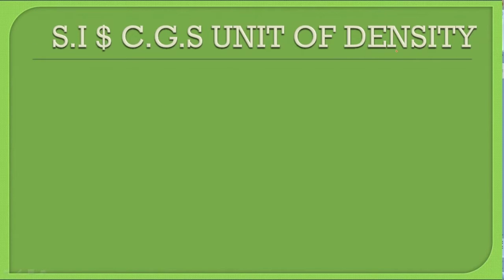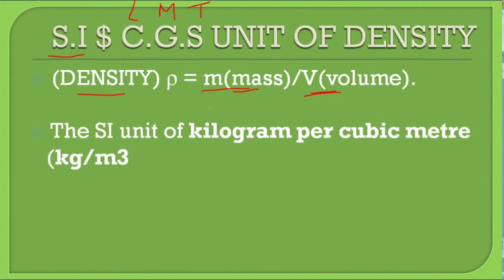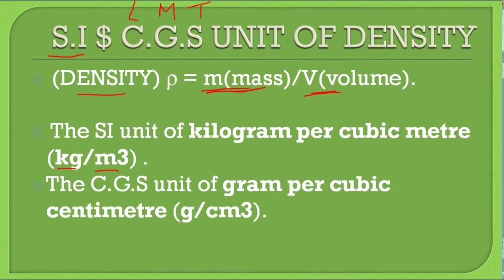Now we need to know the SI and CGS units of density. In CGS, C stands for centimeter (length), G stands for gram (mass), and S stands for second (time). SI stands for Système International. Since density is mass upon volume, in SI the mass is kg and volume is meter cube, so the SI unit of density is kg per meter cube. In CGS, mass is gram and volume is centimeter cube, so the CGS unit of density is gram per centimeter cube.